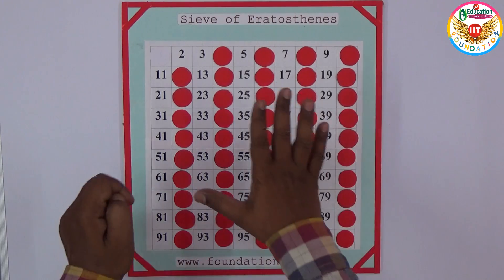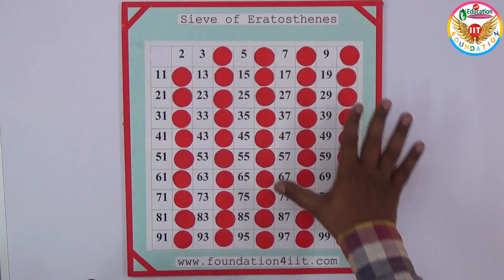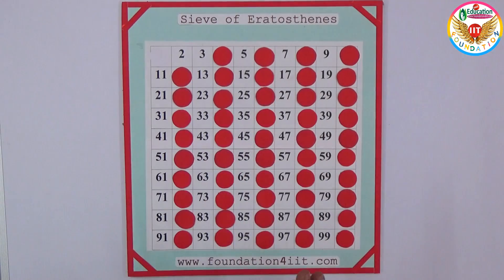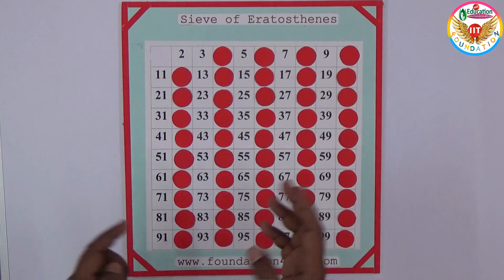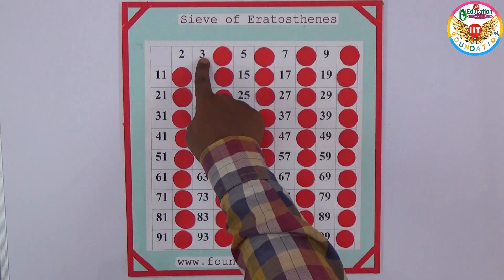Now, except for 2 itself, all the remaining multiples of 2 are closed. These are all not prime numbers — they are composite numbers. Now let us see the next number, 3.